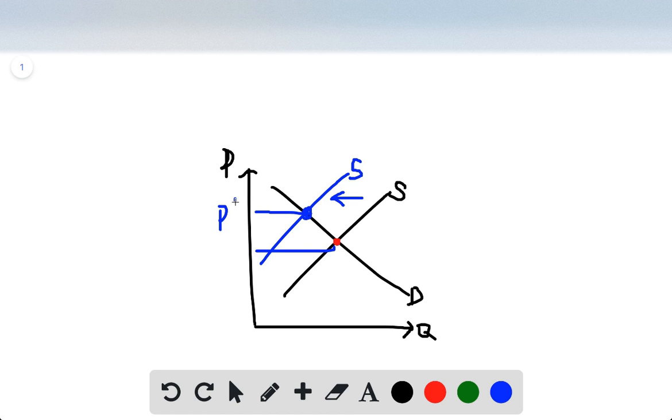This P prime is higher, that is why the price of orange juice rises in supermarkets. Okay, Part B: When the weather turns warm in New England every summer, the price of hotel rooms in Caribbean resorts plummets. So now we need a new diagram.